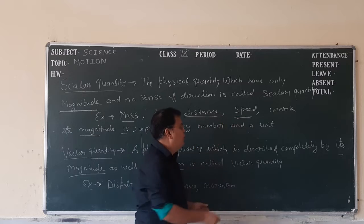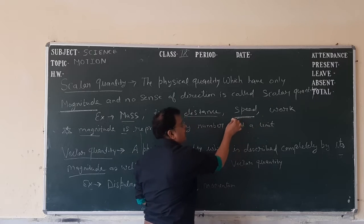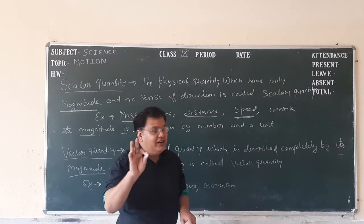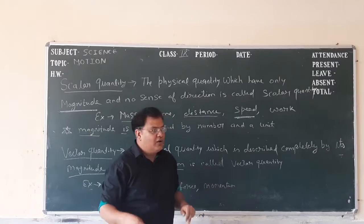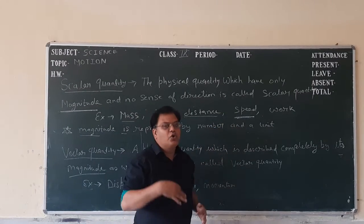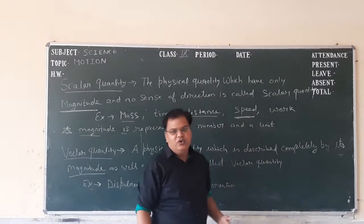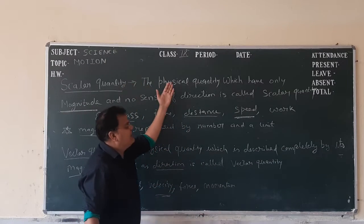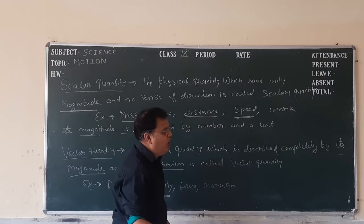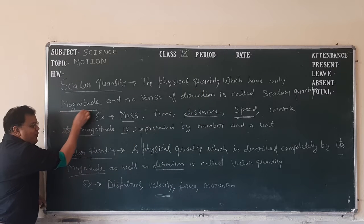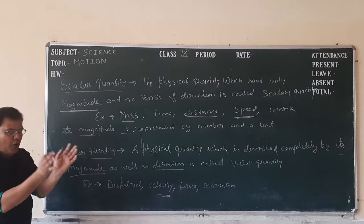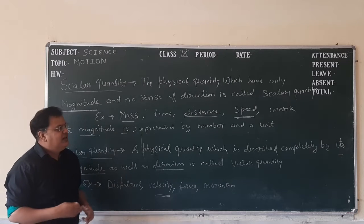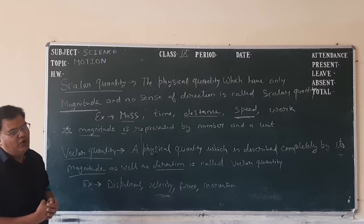Speed gives you 4 km per hour, 2 km per hour, but there is no direction. Work is also a scalar quantity. To summarize: scalar quantity is the physical quantity which has only magnitude — that means it has only values in terms of number — and no sense of direction. That type of quantity is known as scalar quantity.